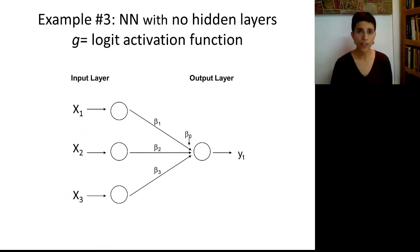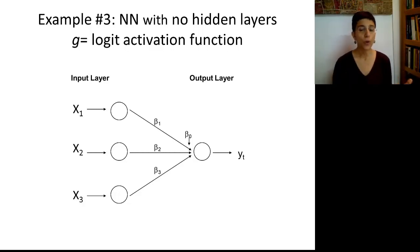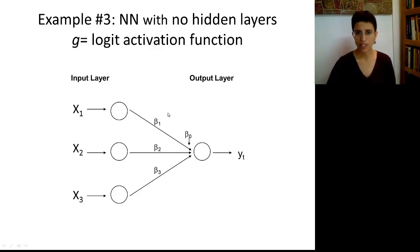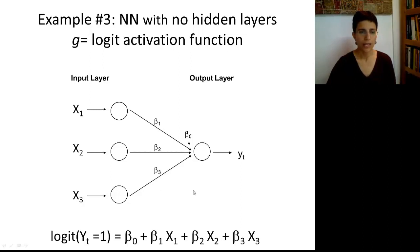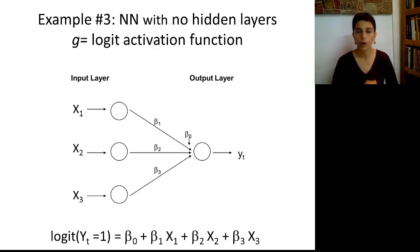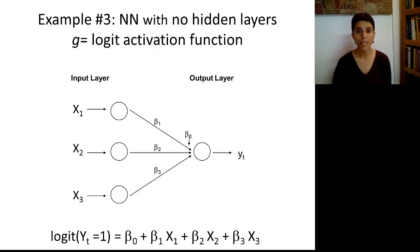Finally, let's look at a third example using an S-shaped function — a network with no hidden layers using the logit activation function. This gives us something familiar: we take the inputs, apply a logit function of their combination together with betas and the bias beta 0, and that gives us a logistic regression type equation. So in a sense, neural nets are a generalization of the concept of regression, although the main difference is that these betas — or more generally the w's and thetas — will be estimated in a different way.